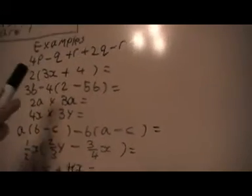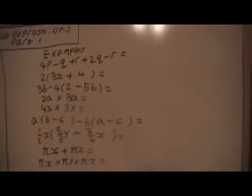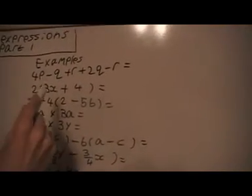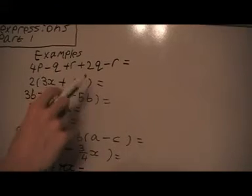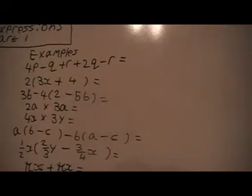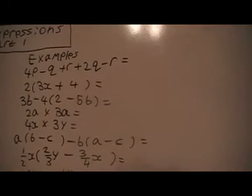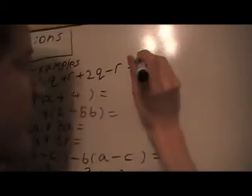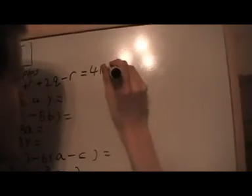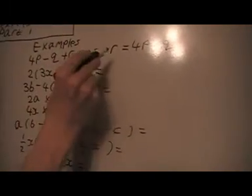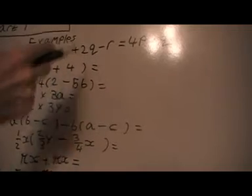Right. So now I'm going to work out these examples for you. So what I do is I collect the terms that are the same, because those are the only ones I can combine. So I've got 4p. I've got a minus q plus 2q. That's going to give us q plus q. And now I've got a plus r and the minus r, so those cancel.